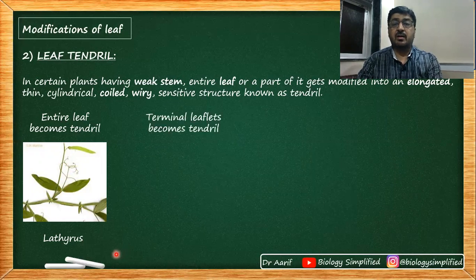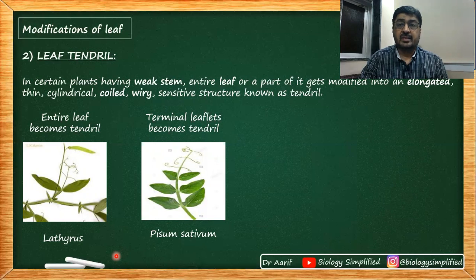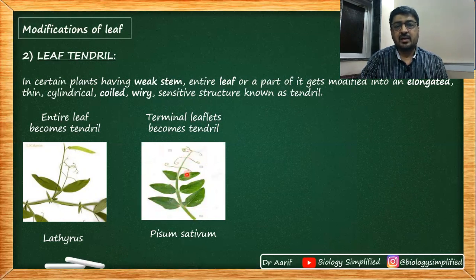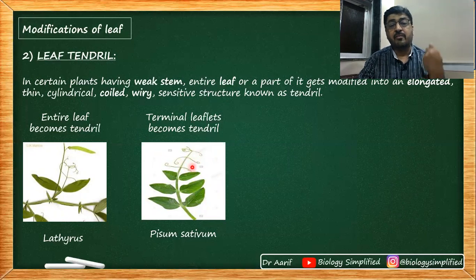Second example: terminal leaflets become tendril — in the case of Pisum sativum, Mendel's plant. Look at the image of a Pisum leaf — you can see the rachis, the leaflets. This is one compound leaf divided into leaflets, pinnately compound because the leaflets are attached to the rachis. The terminal leaflets have been converted into thin, cylindrical, coiled, wiry structures called tendrils. So terminal leaflets become tendril in Pisum sativum.